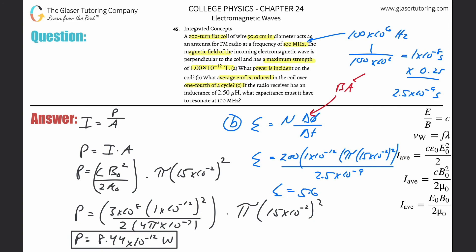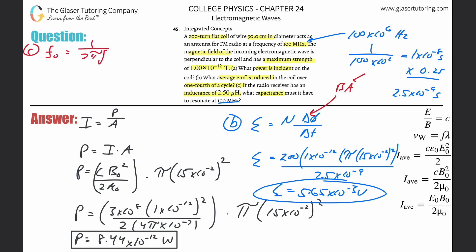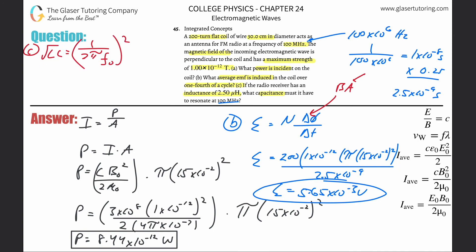So plugging in: 200 times 1×10⁻¹² times π times (15×10⁻²)², all divided by 2.5×10⁻⁹, gives about 5.65×10⁻³ volts. That's the induced EMF. For part C: the radio receiver has an inductance of 2.5 millihenry — what capacitance is needed to resonate at that frequency? Use the resonant frequency formula: resonant frequency equals 1 over 2π times the square root of inductance times capacitance.